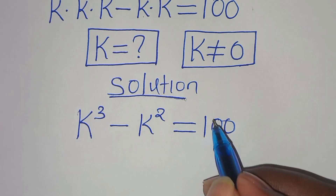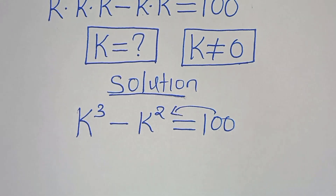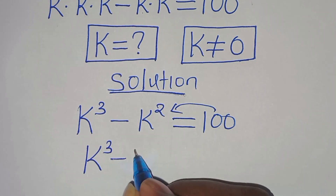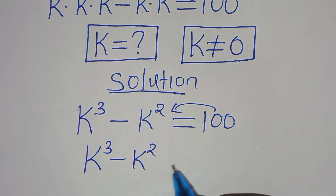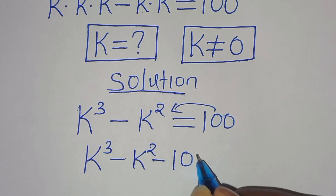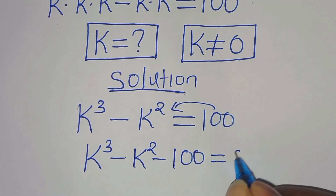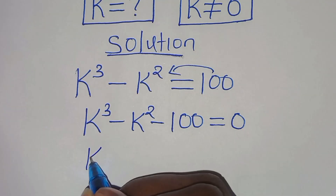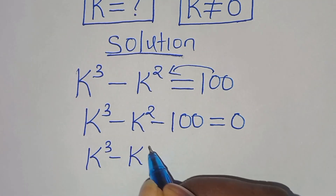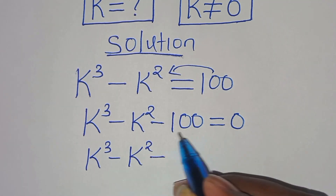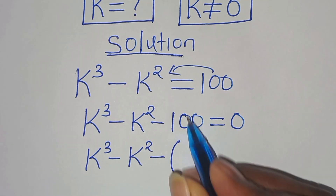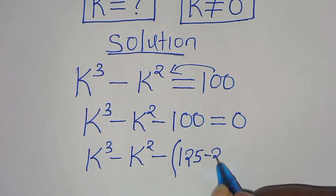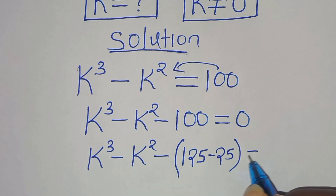The next step is to take 100 to the left hand side, so that we have k to the power of 3 subtract k to the power of 2 minus 100, which is equal to zero. Now, 100 is the same thing as 125 subtract 25, so this is equal to zero.